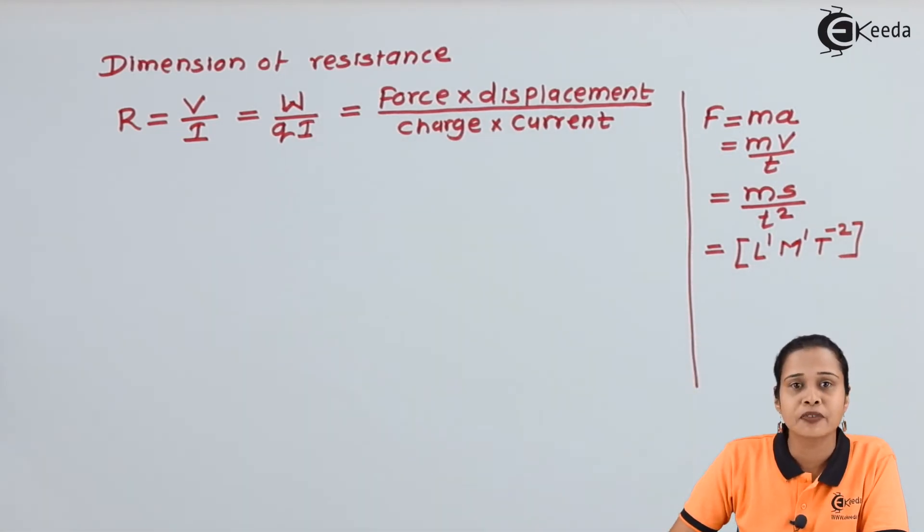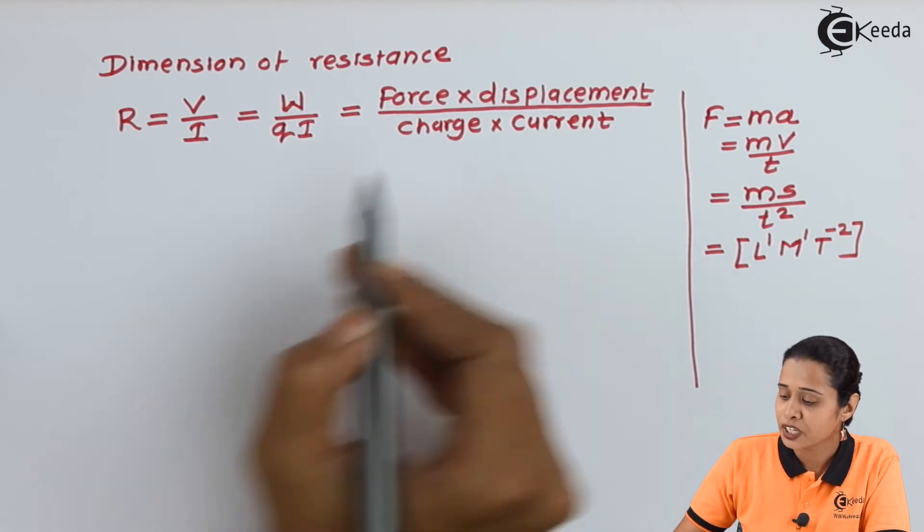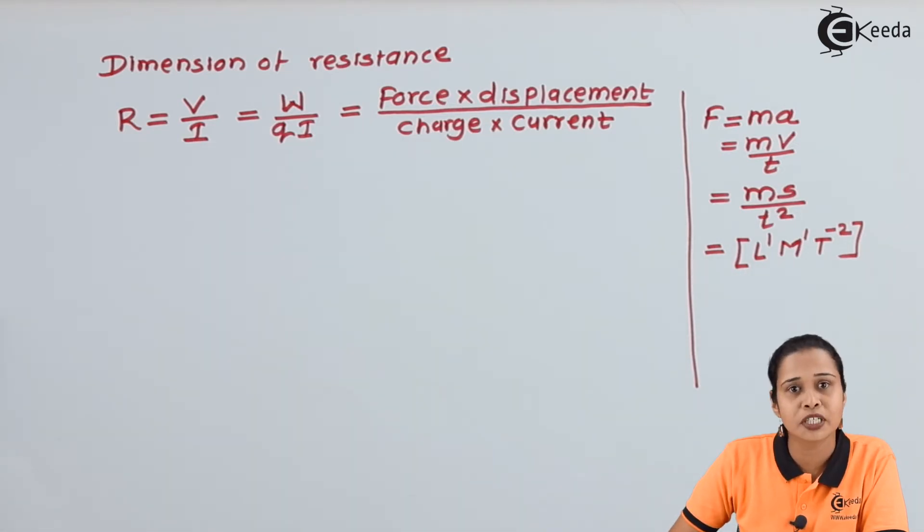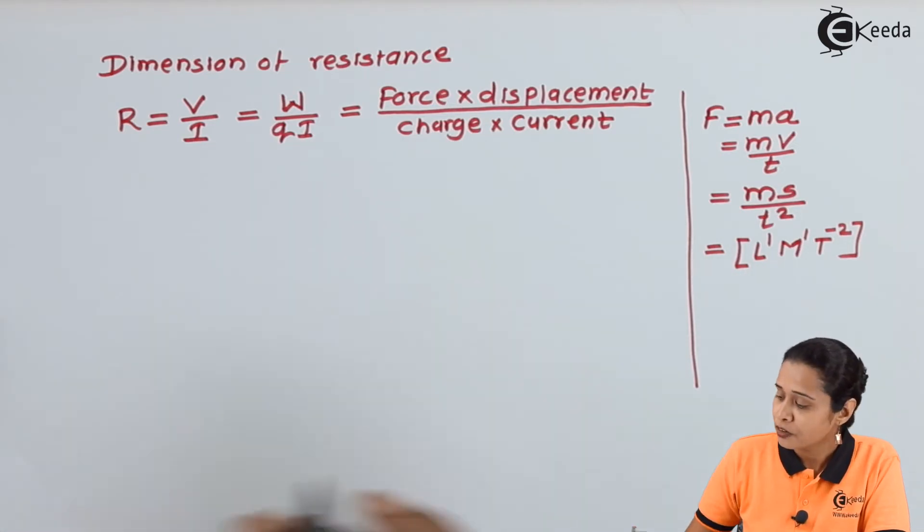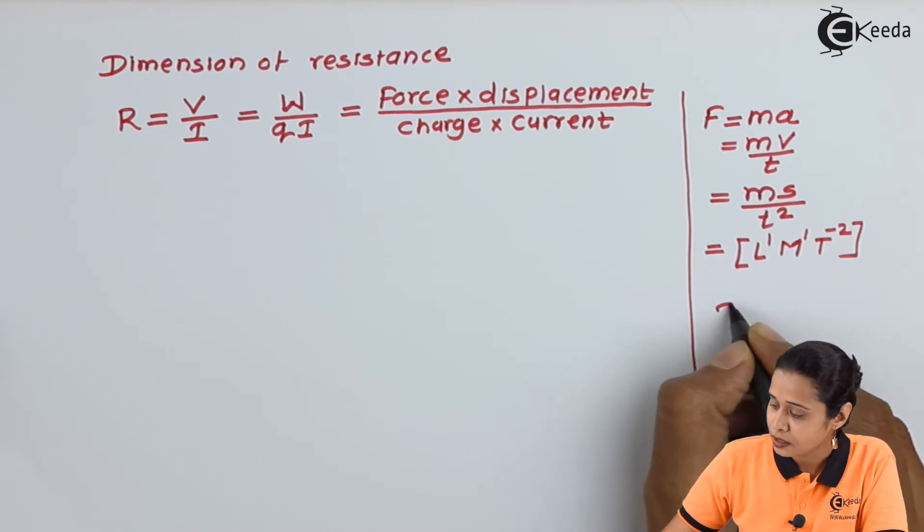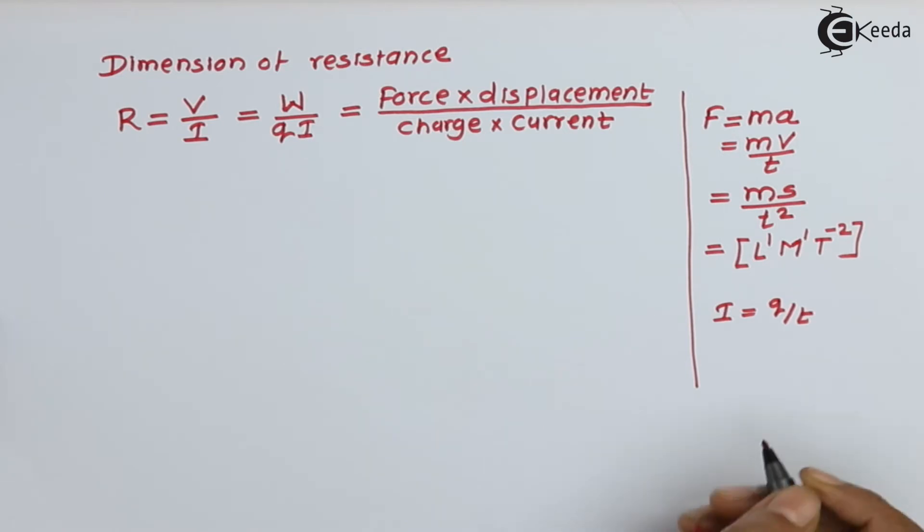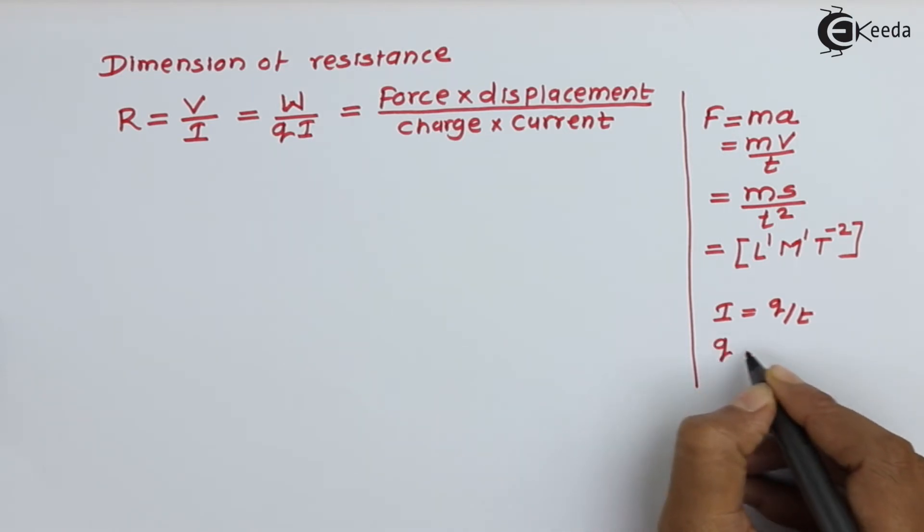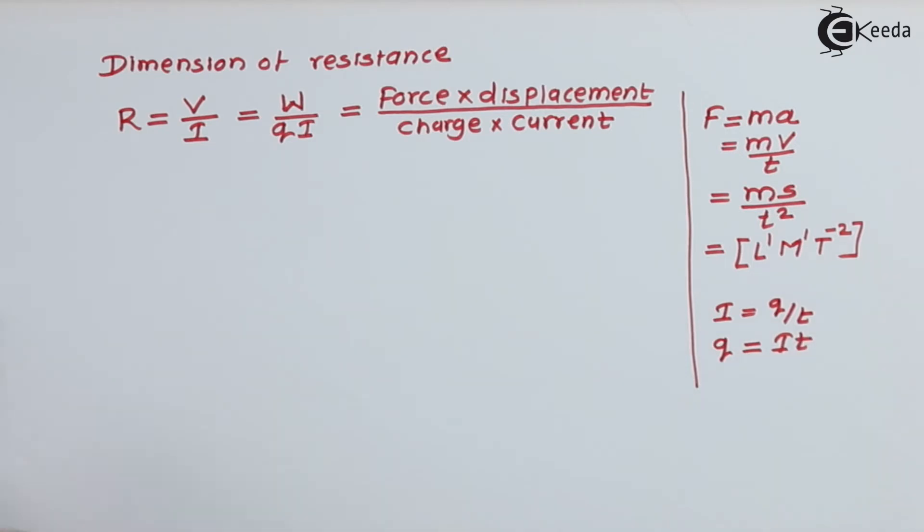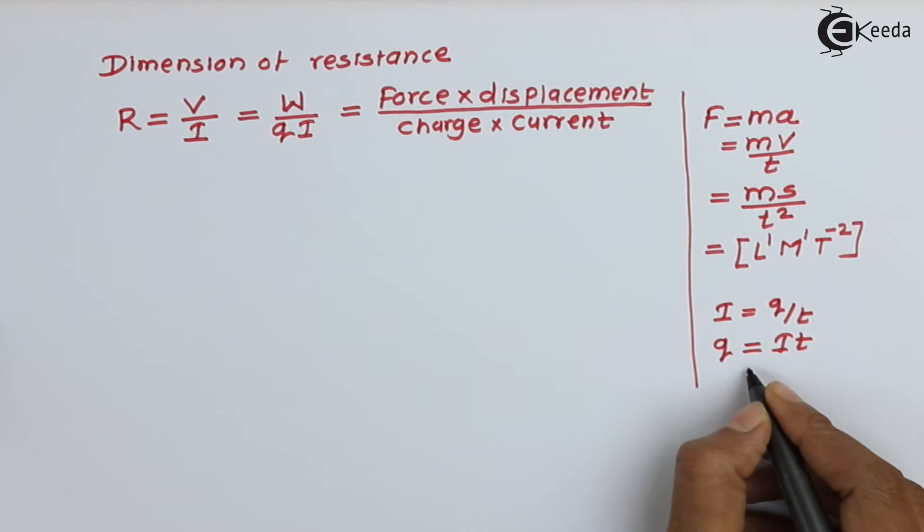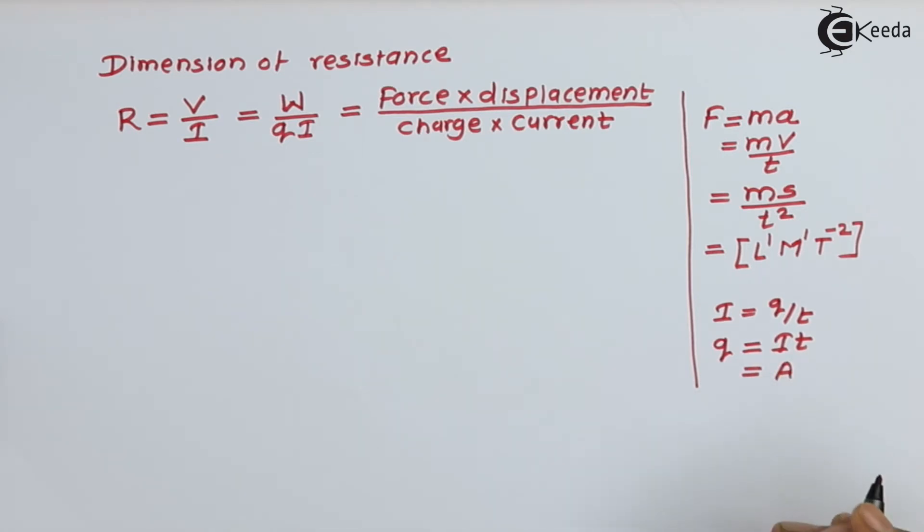Dimension of displacement will be length. Then, we have charge. Let us find out the dimension of charge. We know current I equals charge per unit time. Hence, charge Q = I×T. The dimension of current I is Ampere, and dimension of time is T. So, A¹T¹.